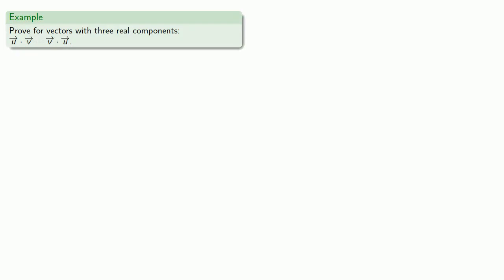So, one of the things we claimed about the dot product is the dot product is commutative. U·V is equal to V·U. Well, let's try to prove it and let's make it a proof for vectors with just three components.